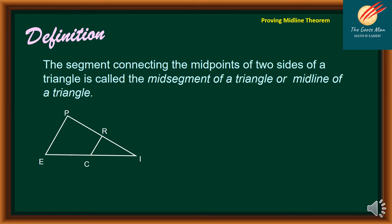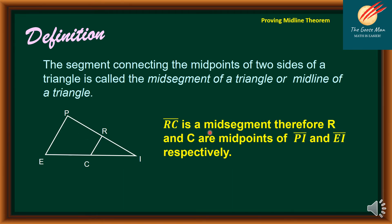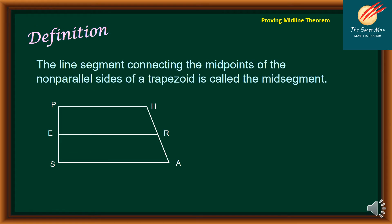Let's move on to new definitions. The segment connecting the midpoints of two sides of a triangle is called the midsegment of a triangle, or midline of a triangle. Consider triangle EPI: RC is the midsegment, so R and C are midpoints of PI and EI respectively. Additionally, the line segment connecting the midpoints of the non-parallel sides of a trapezoid is also called the midsegment. In trapezoid PHAS, ER is the midsegment.